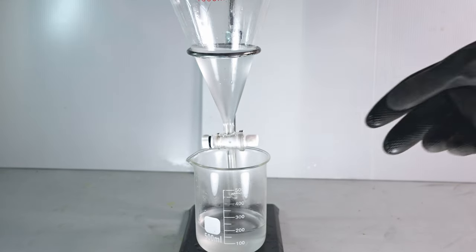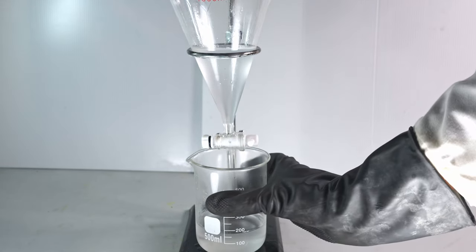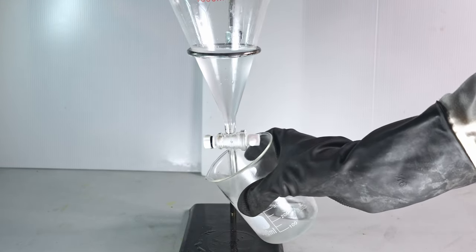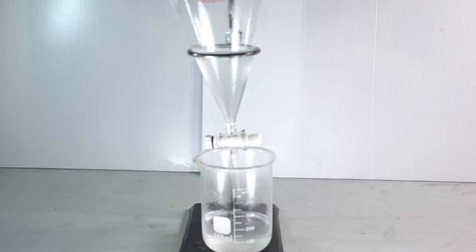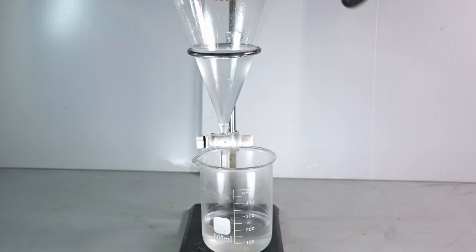Now the aqueous layer is full of a lot of acid and some unreacted alcohol, but we're just going to dispose of this, and then we're going to further neutralize any acid that's contained in our isopropyl chloride.